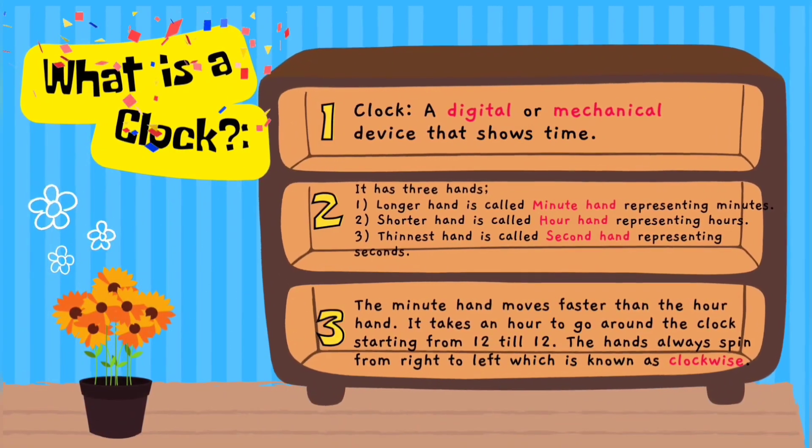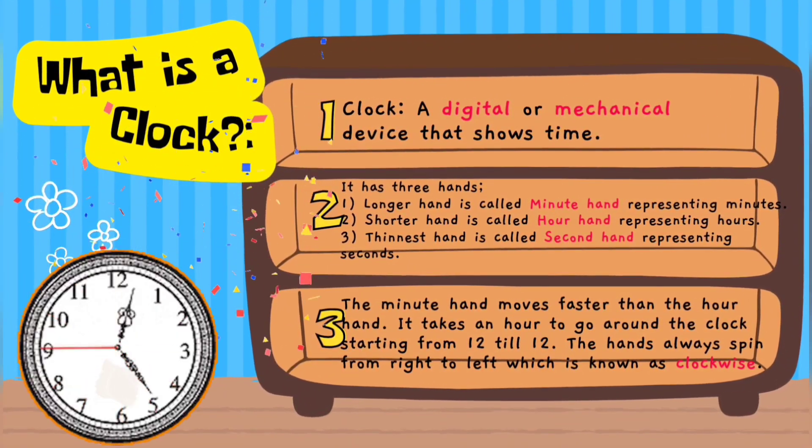What is a clock? A clock is a digital or mechanical device that shows time.